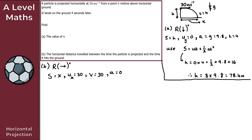With a = 0 and t = 4, we use s = vt. Substituting: x = 30 × 4 = 120. Since we're working in meters per second, the horizontal distance is 120 meters. That gives the solution to question one.